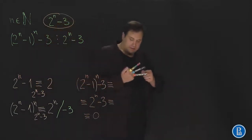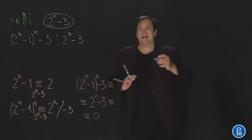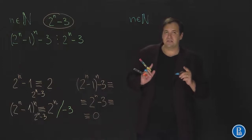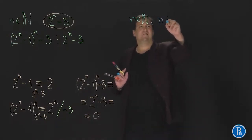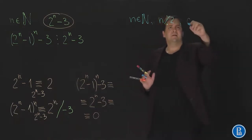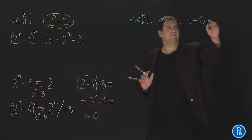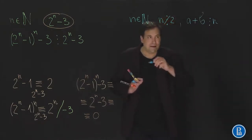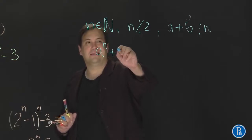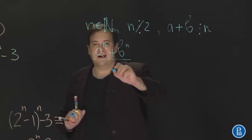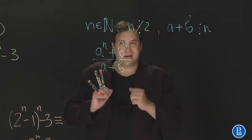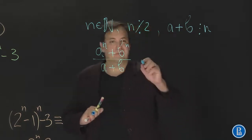Another example. Let's consider once again an arbitrary positive integer n, but this time we will assume that it is odd — not divisible by 2. Also suppose that we have integers a and b such that a plus b is divisible by n. Now consider the fraction a to the power of n plus b to the power of n, divided by a plus b. The task is to prove that this fraction is not only an integer, but an integer divisible by n.